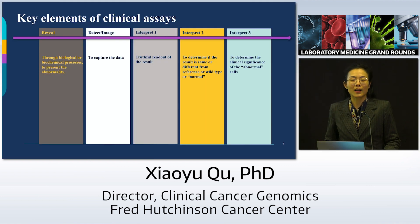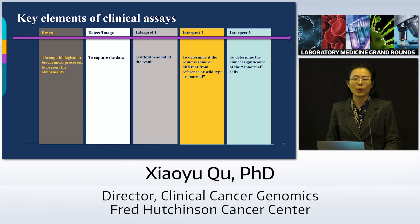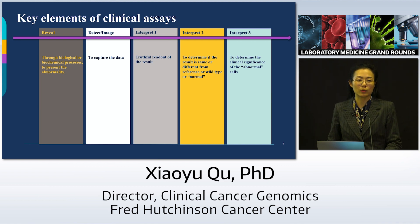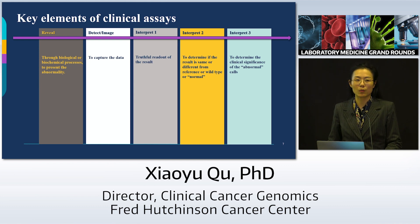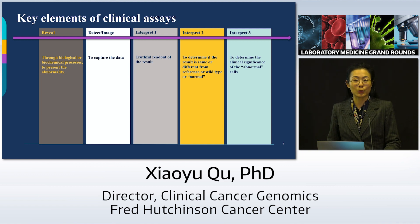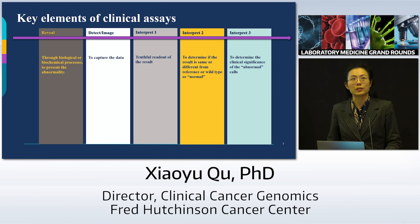No matter what kind of tests we run in the lab, we have to identify abnormalities. The first stage is that there must be something we do to reveal the abnormality — a biological or biochemical process that makes the abnormality show itself visibly, whether to human eyes, through microscopy, or through an instrument such as an imager, a machine, or a sequencer. That's the second step: detect or image.